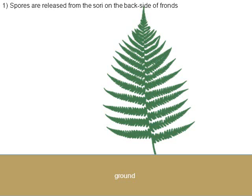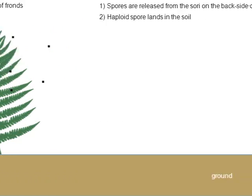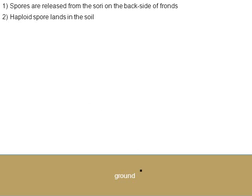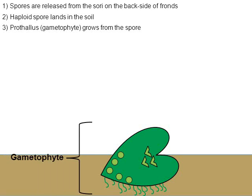Let's look at this process in more detail. Here we have a fern with fronds standing up. Spores are released from the sorai on the backside of the fronds. In the animation, you see it's releasing black dots representing spores. Let's follow one spore as it lands on the ground. Spores are haploid, so the spore represents the beginning of the haploid stage — the gametophyte. That spore is going to grow into the heart-shaped structure called the prothallus, about the size of a fingernail — the fern's gametophyte stage.